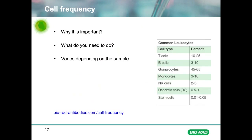In addition to marker density, the frequency of the cell you are interested in is also very important. If you are looking at abundant cells such as T cells in peripheral blood, which are between 10 and 25%, it will be relatively easy to collect enough sample for a statistically significant result, and the choice of fluorophore may not be critical. However, if you are looking for rarer populations such as dendritic cells, which are about 0.5 to 1% in peripheral blood, you will need to stain and collect 10 times more cells to end up with the same number in your final analysis. It is also better to use a bright fluorophore when looking for rare populations.